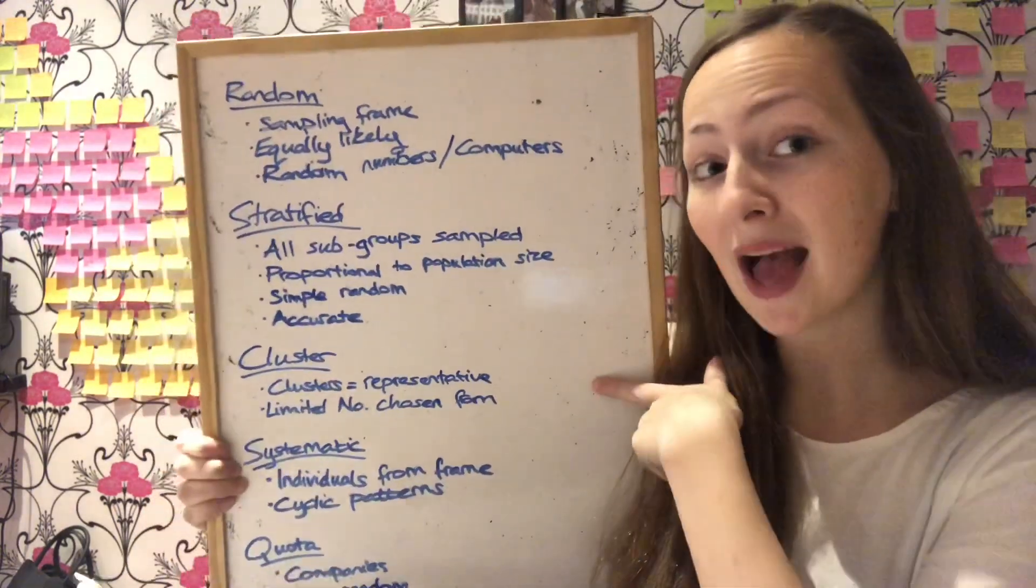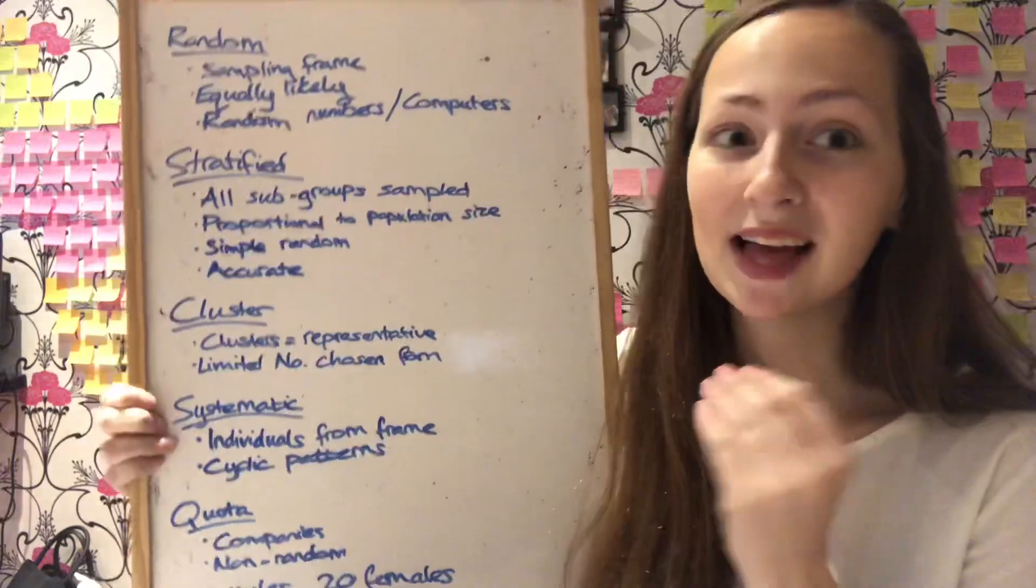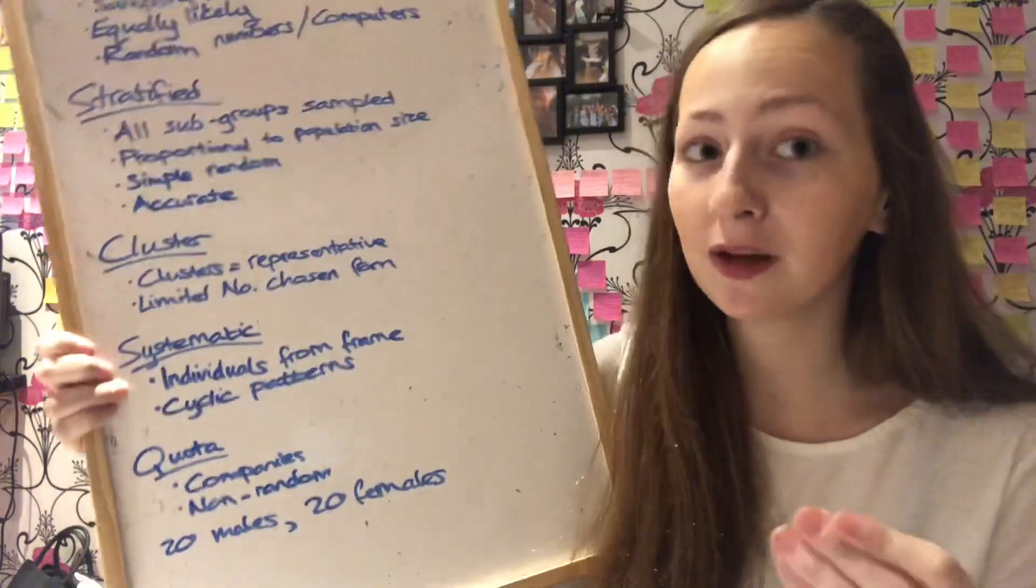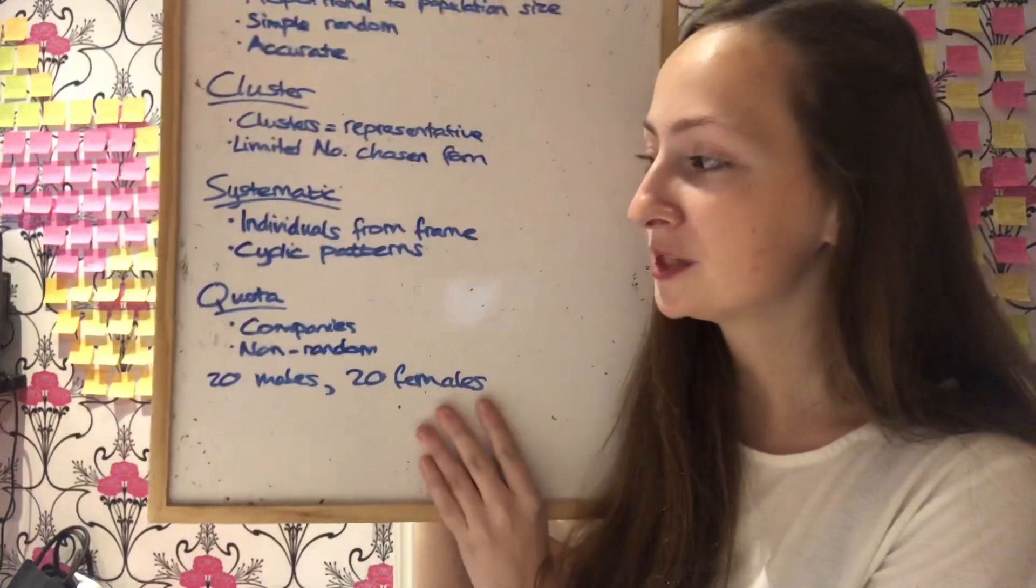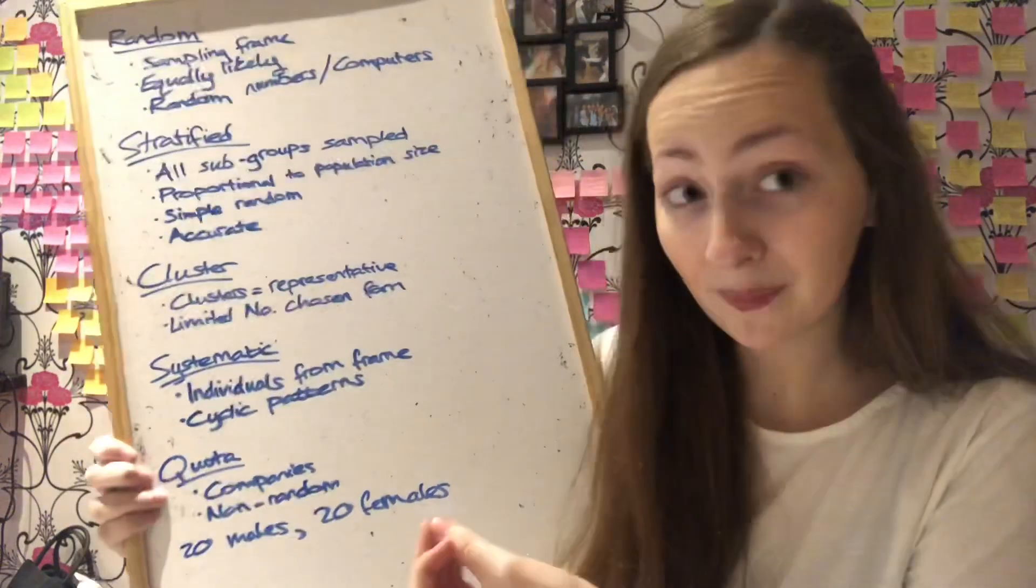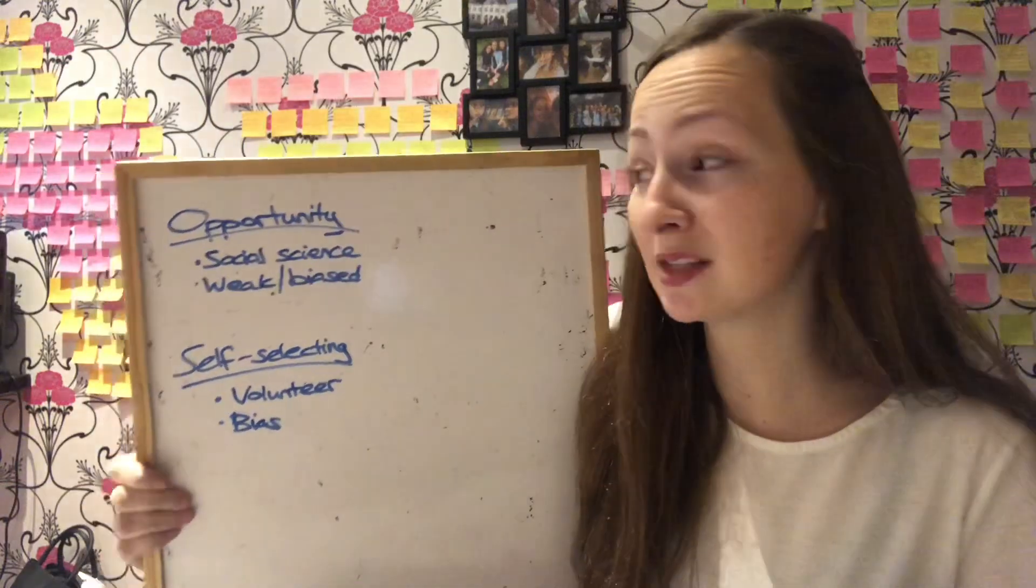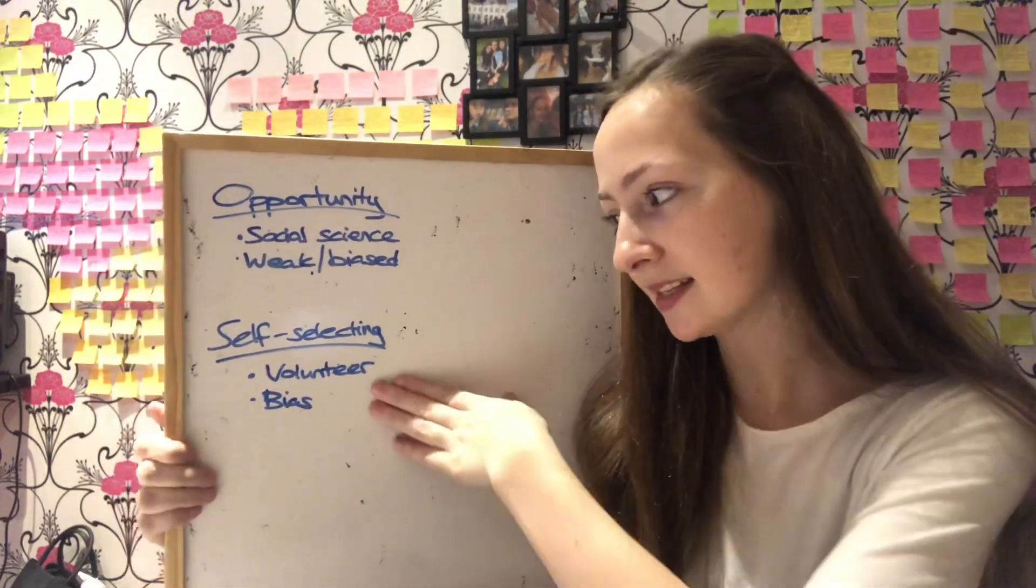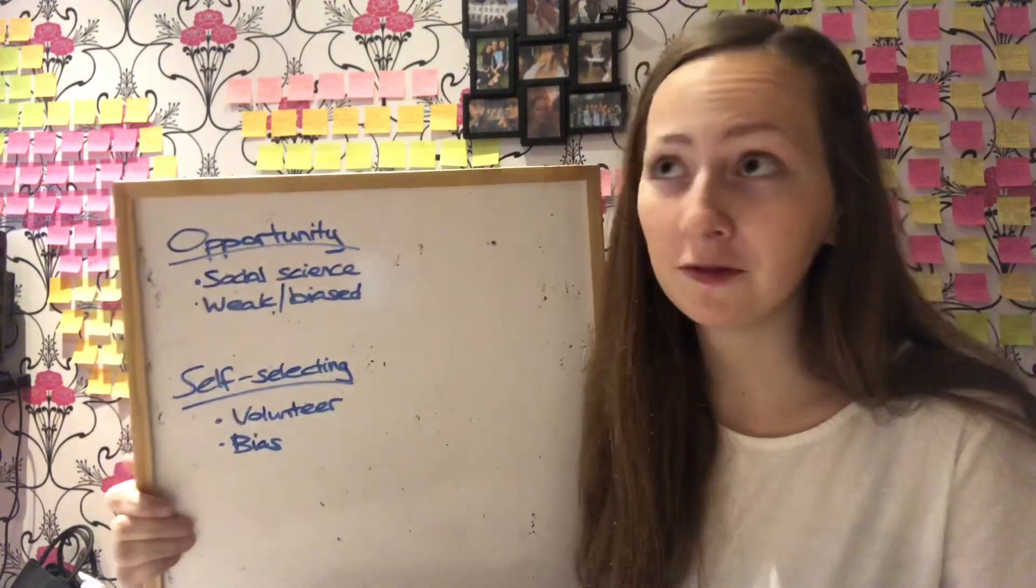And then we have cluster sampling. Cluster sampling is where a limited number of clusters are chosen from. Those are sampled. But the clusters must be representative of the whole population. That's like a few towns being chosen out of the whole of the country. And then we have systematic sampling. This is where individuals are chosen from a sampling frame. But you must be aware of cyclic patterns that may be occurring which would make it inaccurate. That could be like choosing from a register or an electoral roll. And then we've also got quota sampling which is often used by companies. And it's also non-random. This is like a company going out and surveying 20 males and 20 females. Opportunity sampling is useful for social scientists. But it's the weakest form of sampling because it produces biased results. It is simply used when circumstances make it readily available. Like you just stand at a room and survey everybody that comes in. And finally the self-selecting sample is where people volunteer to take part. But this is also not used in serious research as it produces biased results and may not be conclusive as the volunteers may refuse to answer certain questions.